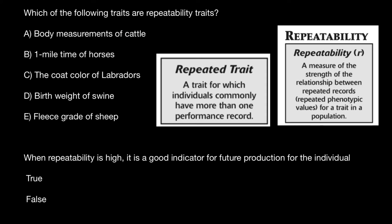Can we take many body measurements of cattle during a certain period of time? Yes, so this is a repeatable trait. Variant B: one mile time of horses. Of course, horses can run one mile multiple times, so this is also a repeatable trait, and we take measurements in the form of seconds or minutes.